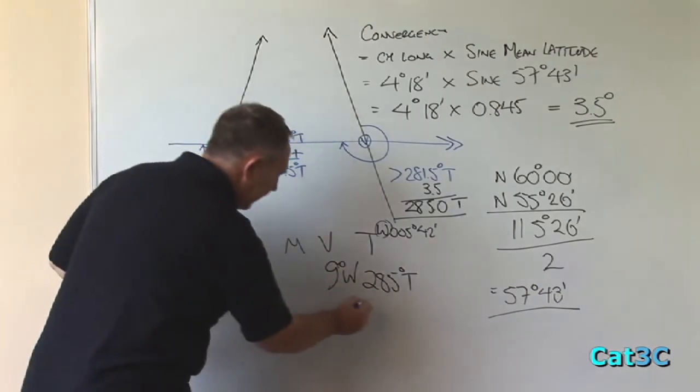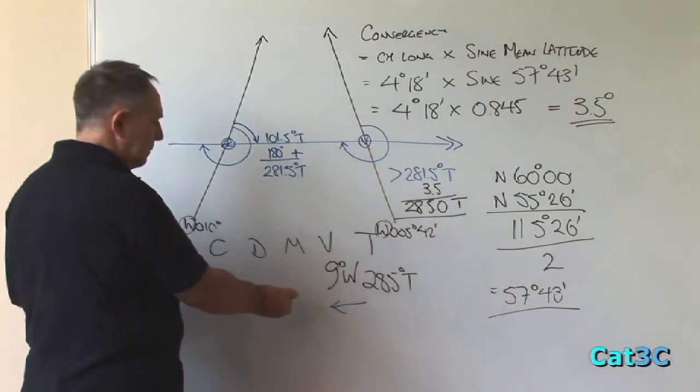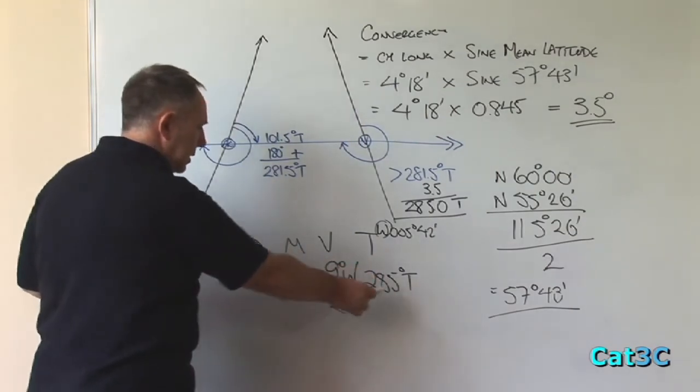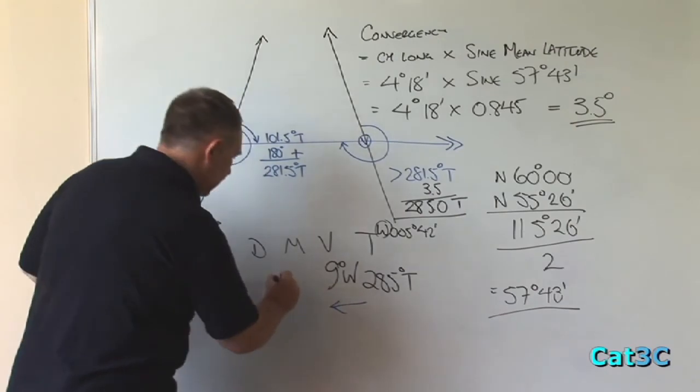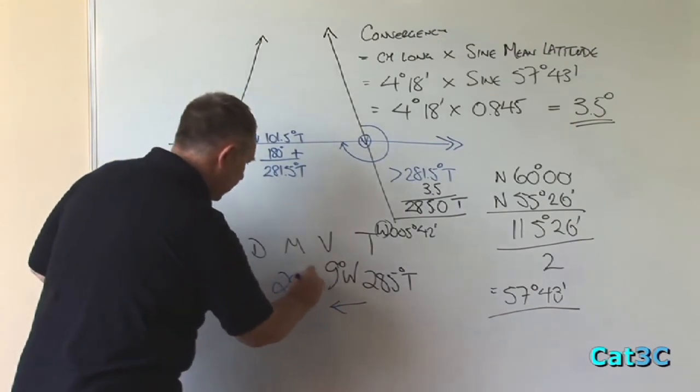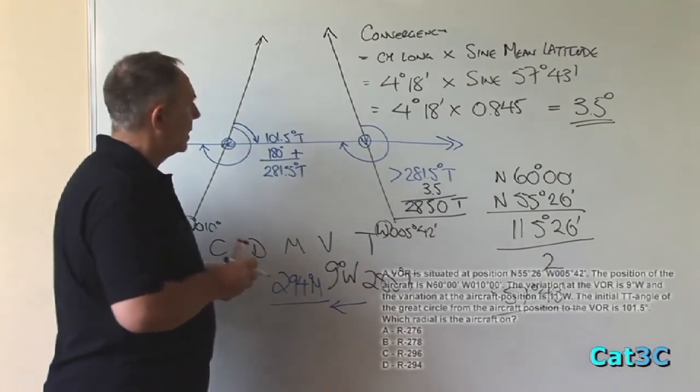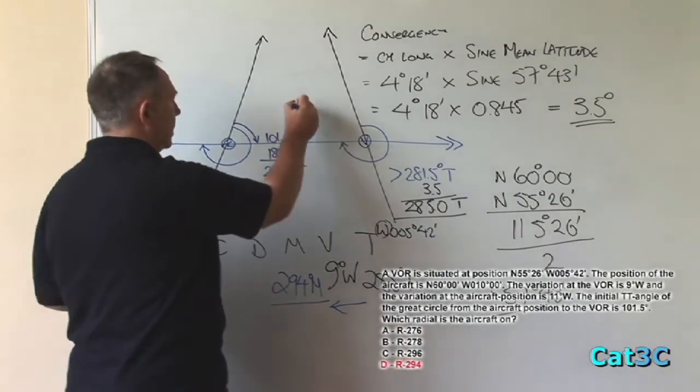West is to the left, meaning that the magnetic track or the magnetic heading or track is greater than the true track or heading. 285 plus 9 gives me 294 degrees magnetic. Therefore, the radial that the aircraft is on is the 294 degree radial.